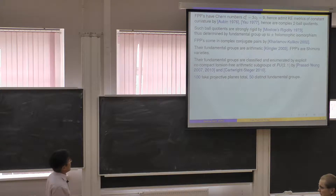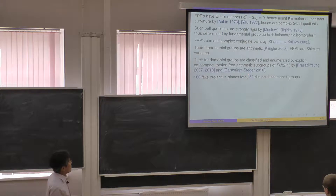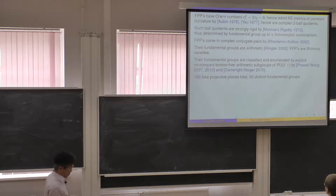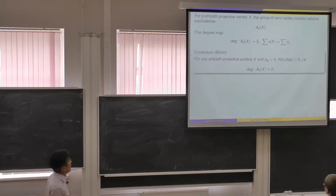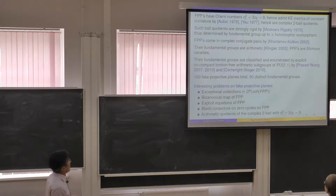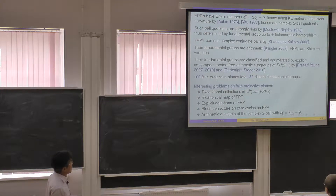The fundamental groups are arithmetic, so fake projective planes are arithmetic varieties. Their fundamental groups are classified as cocompact torsion-free arithmetic subgroups of PU(2,1) by Prasad and Yeung, and by Cartwright and Steger. The result is quite surprising: there are exactly 100 fake projective planes in total, forming 50 distinct fundamental groups.